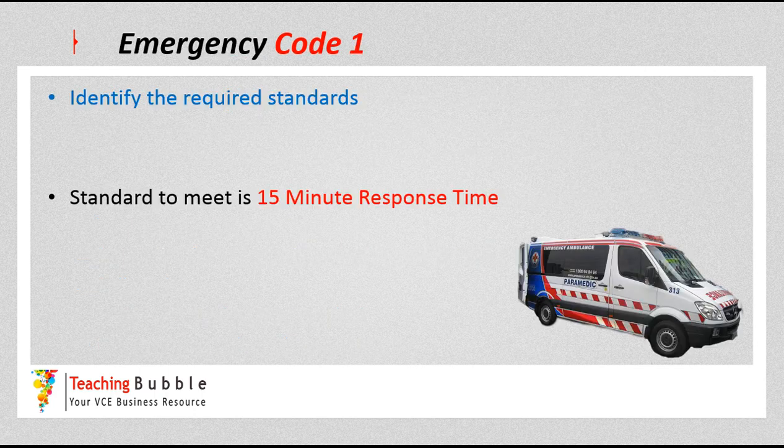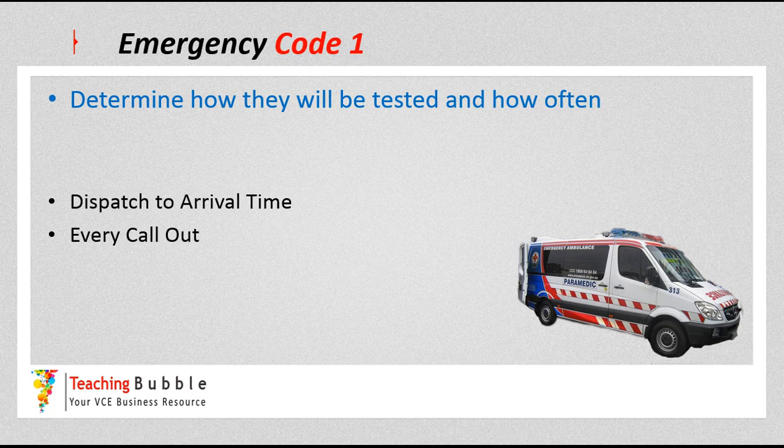As an example, the ambulance's emergency code one — with lights and sirens on — is their top emergency standard, and they aim to meet a 15-minute response time from when they receive the call-out. They would then determine how that's tested: dispatch to arrival time. They measure it when the ambulance arrives and calls through that they've arrived at the scene, and they do this for every single call-out.